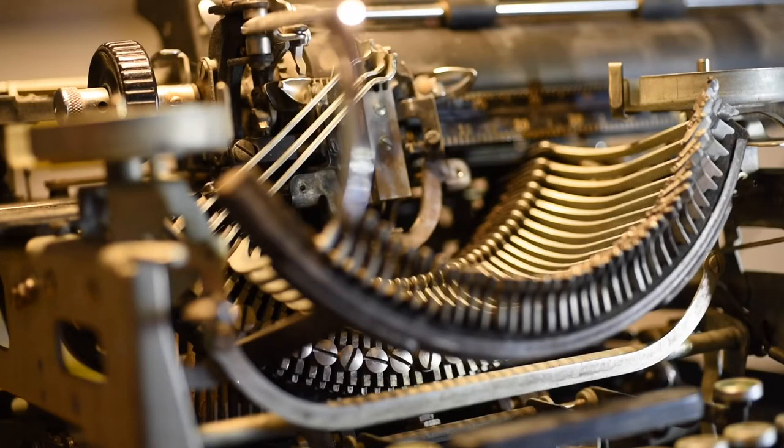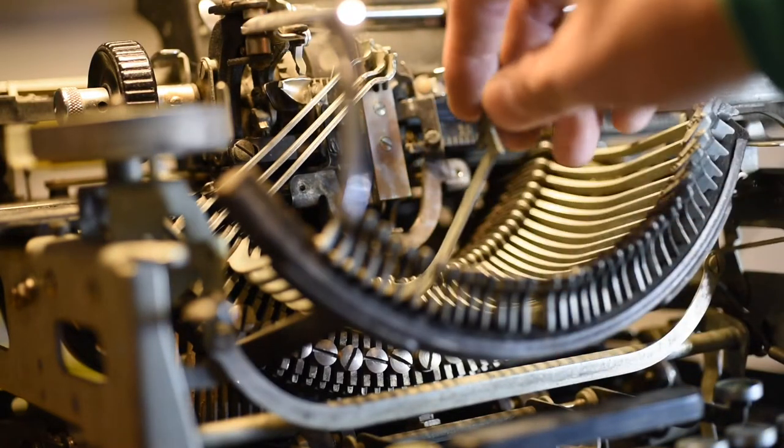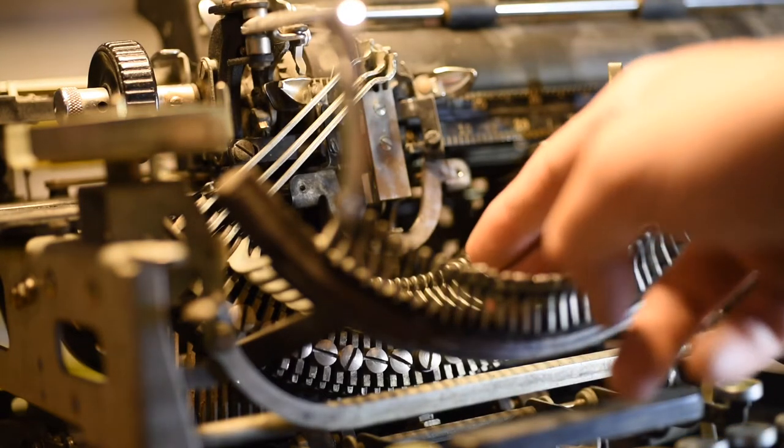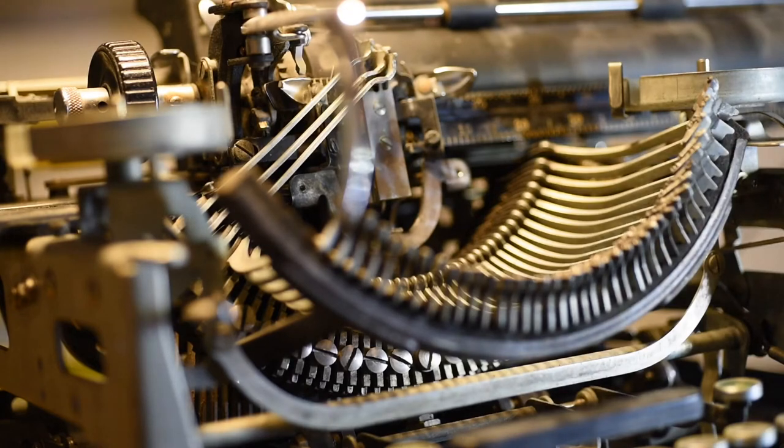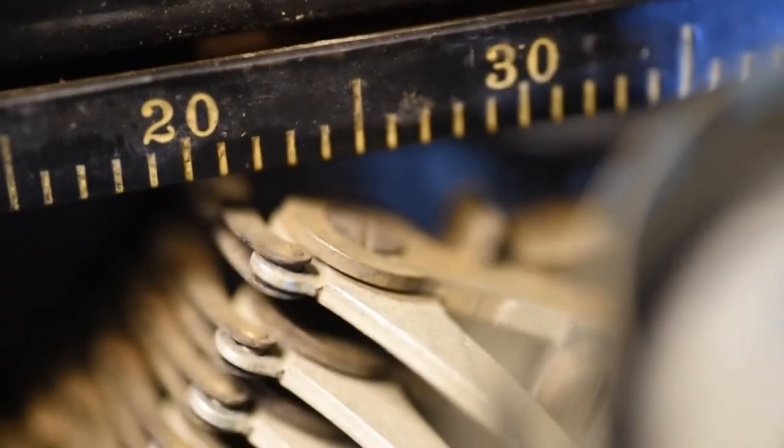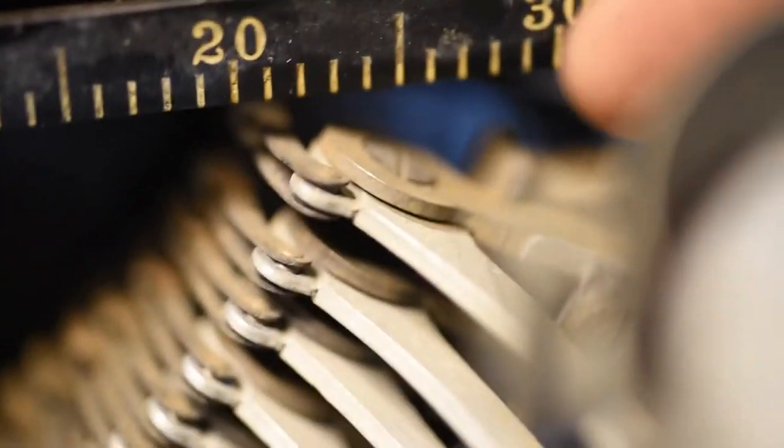The interesting thing about all of these key levers and type bars inside the LC Smith is that each one runs on its own individual round ball bearing. When you snap off one of these bars, you actually need to replace the ball bearing itself. I've pulled the camera off the tripod to get a closer look. You can see each one of these is its own individual ball bearing.